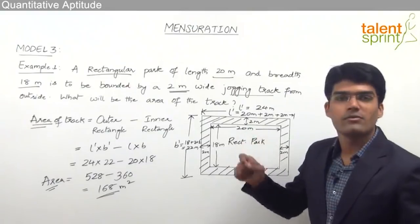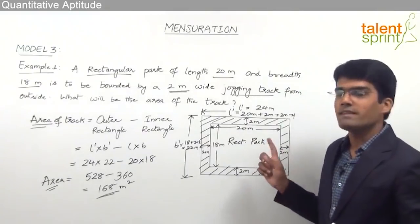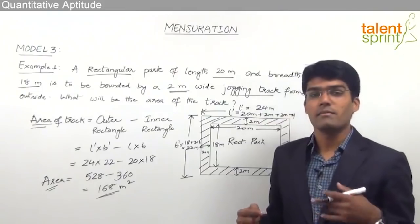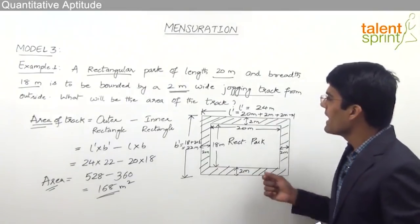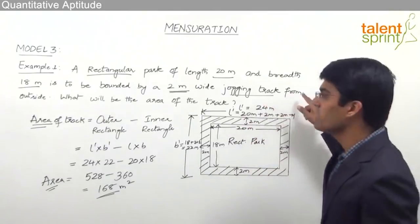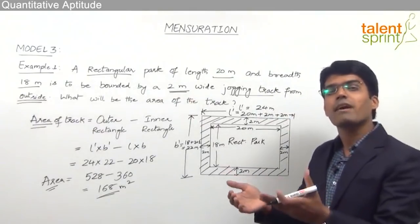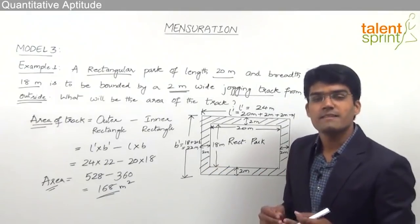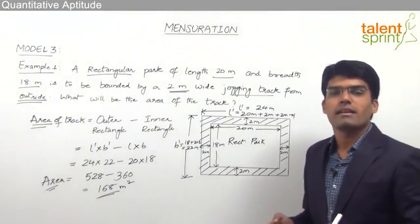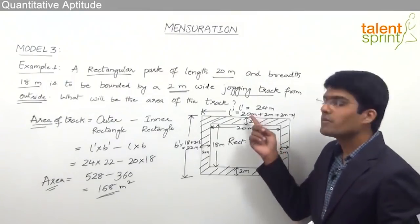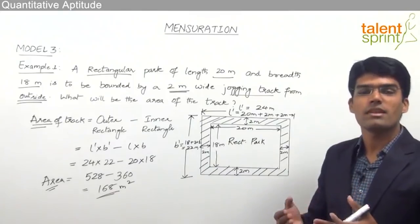This is how we find the area of a track or footpath — outer rectangle area minus inner rectangle area. Be careful while measuring the length and breadth of the outer rectangle: it must be extended on both sides. Similarly, if the track is constructed inside the park, the outer rectangle is the park itself and the inner dimensions are calculated as 20 - 2 - 2 and 18 - 2 - 2. The key is whether it's constructed outside or inside.